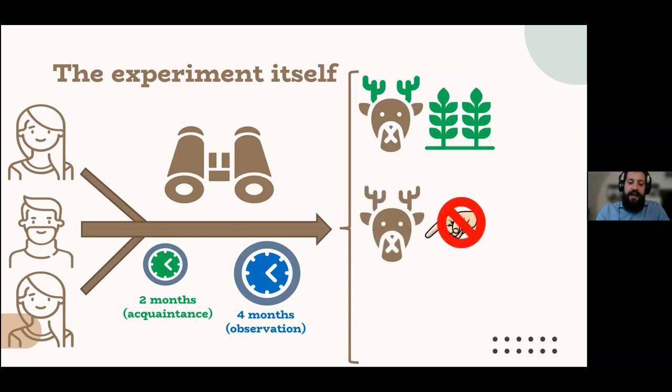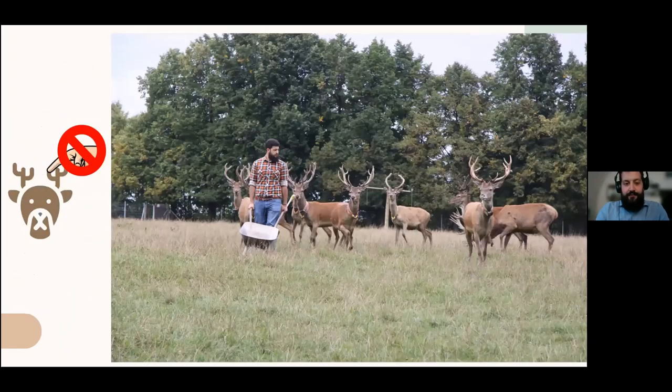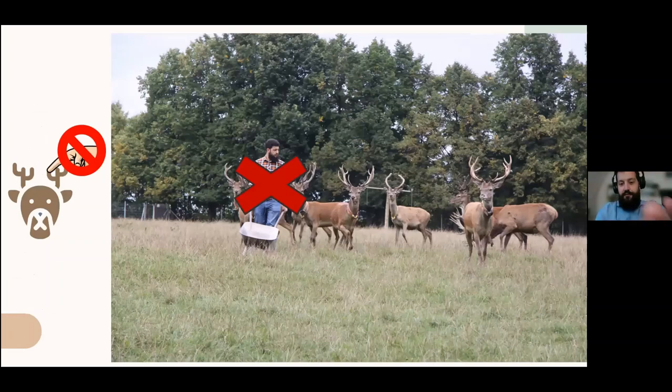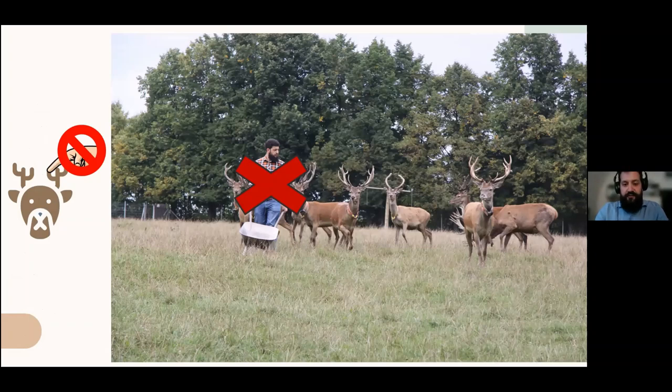The second context is what we call normal time. So basically, there was no external stimulus attracting the animals. So they were just conducting their regular deer life. You can imagine basically like this context without me. So just the deer roaming in the paddock, laying down, browsing, and doing whatever they felt like doing.